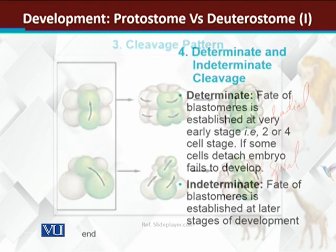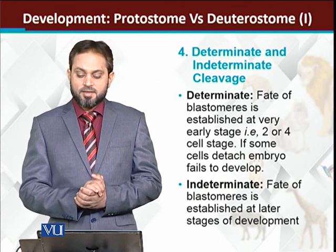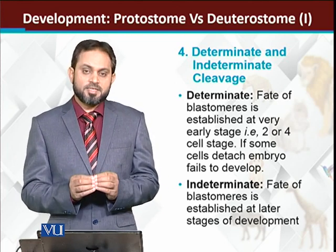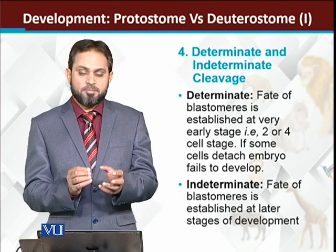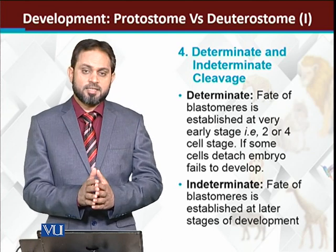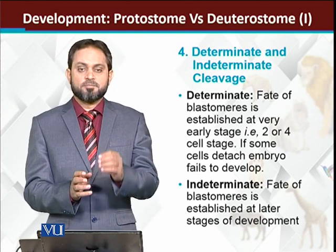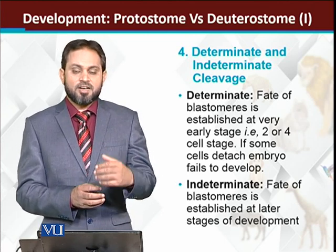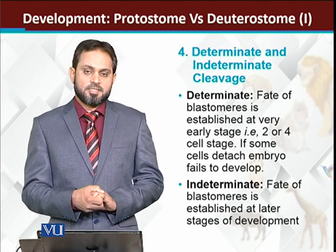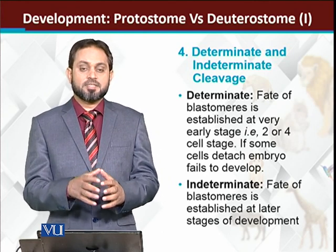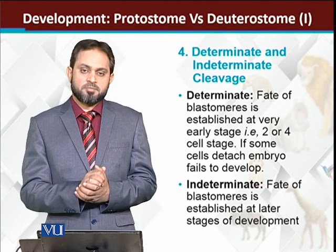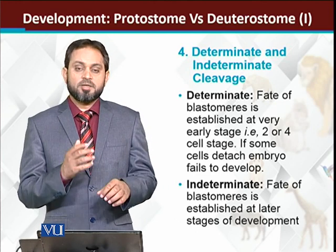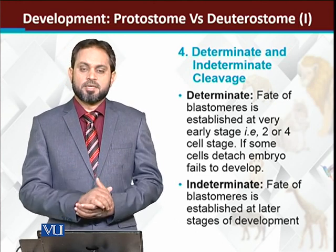The other difference between protostomes and deuterostomes is determinate and indeterminate cleavage. In protostomes, when the embryo is at the two-cell or four-cell stage, the fate of each cell is already confirmed — if those cells are removed from the embryo, the relevant organ will not be formed. جبکہ deuterostomes میں ایسا نہیں ہے — in deuterostomes, cell fate is determined at later embryonic stages, so if cells are removed, no body organ will be missing and all body organs will still develop.